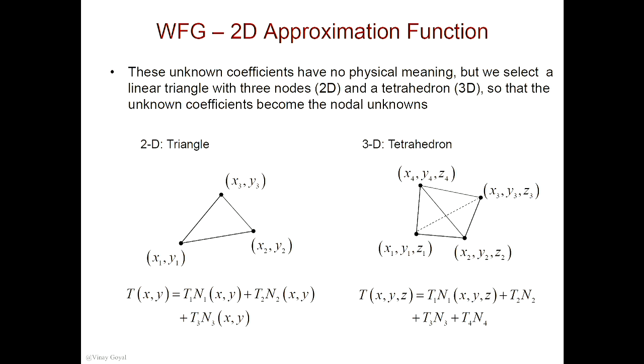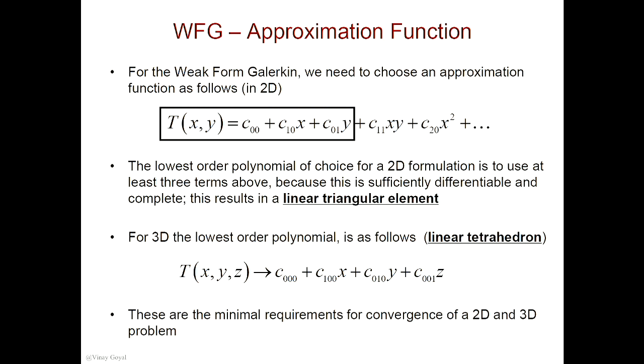But I don't want you to lose sight that what we're really doing is coming up with an approximation function to the problem. How do I find these N's? Basically by relating these unknown coefficients to the nodal quantities — that's really what I want to do. So to do that, for a 2D triangle, it's very important to keep in mind the convention here. In 1D, we didn't have to deal with that. But in 2D, it's very important — you want to number nodes counterclockwise because you want to have a positive area for that element.